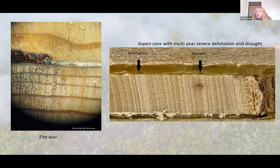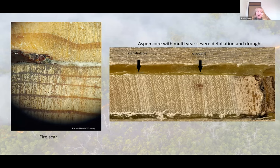Fire scars are usually formed when a low-intensity fire wounds a tree and kills the cambium. The tree responds by flooding the area with resin or sap to protect that open wound. Then over the years, wood grows over the edges of that wound and over the edges of the scar, leaving us a dateable year.